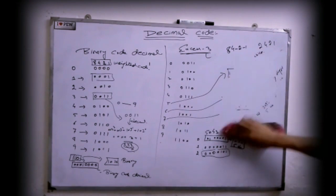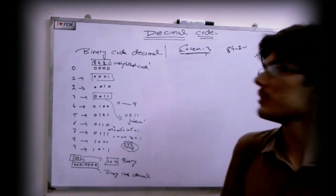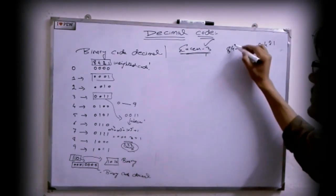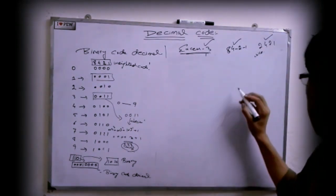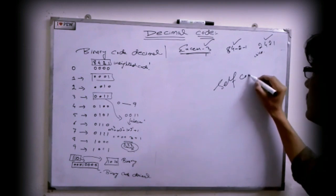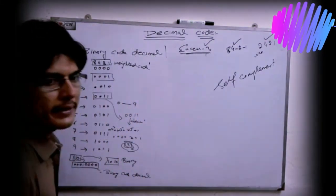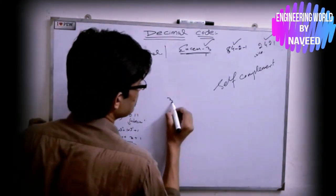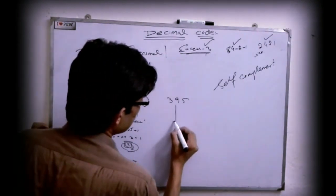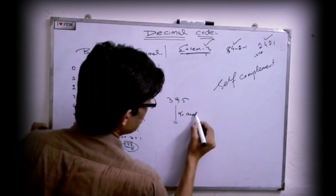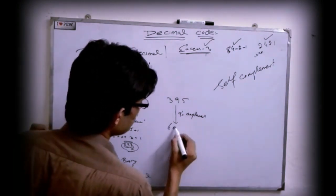One important point is that the XS-3 code, the 8, 4, minus-2, minus-1 decimal code, and the 2-4-2-1 code are all self-complement codes. What this means: if we have a decimal number such as 395, its nine's complement will be equal to 604.